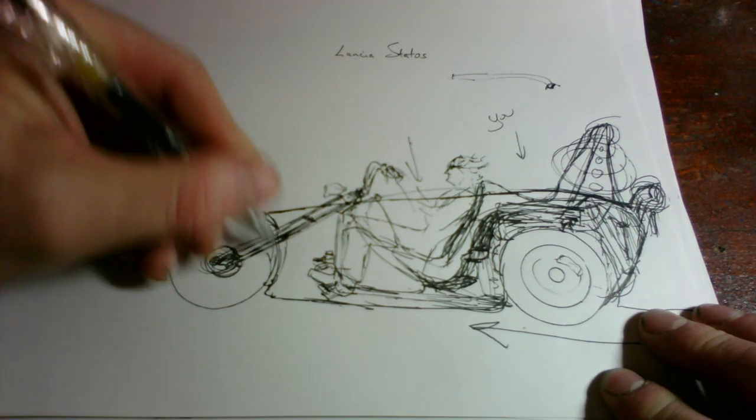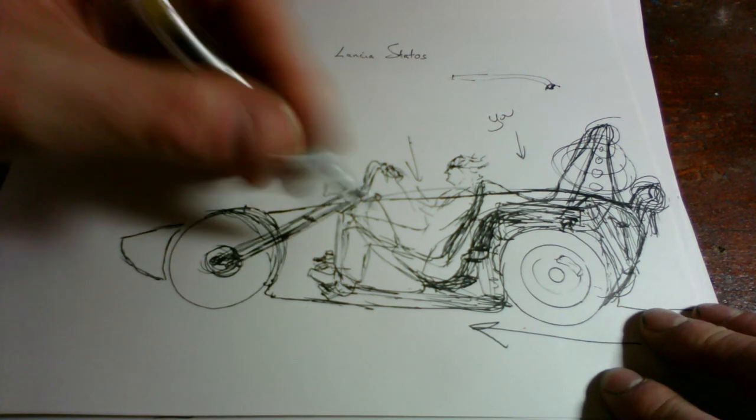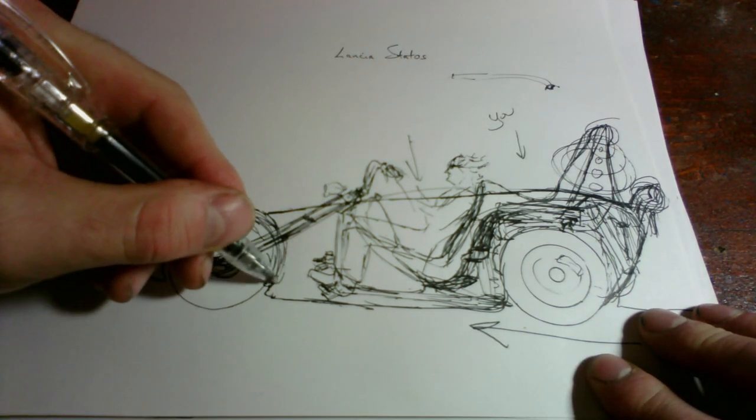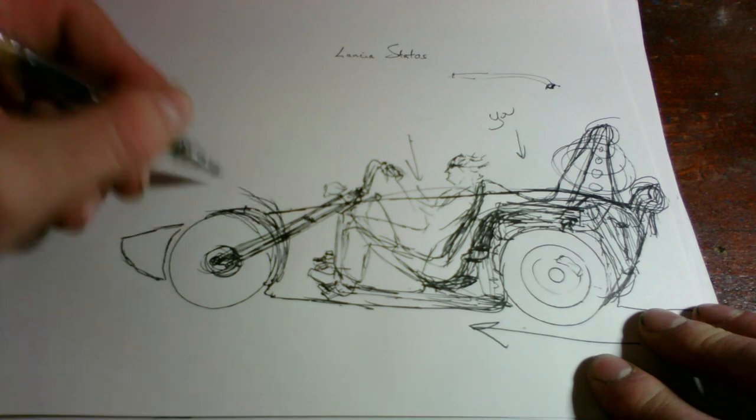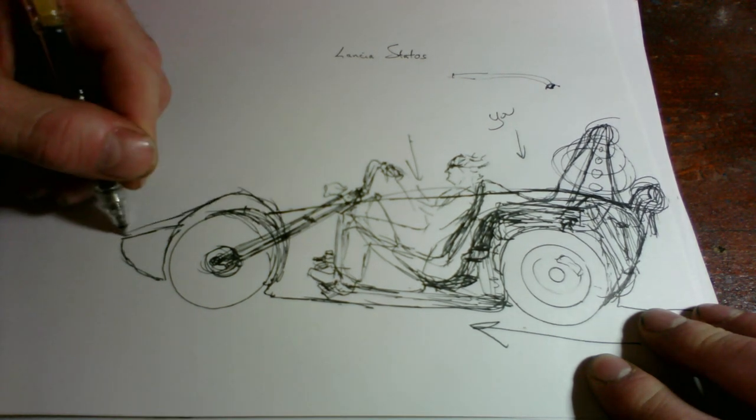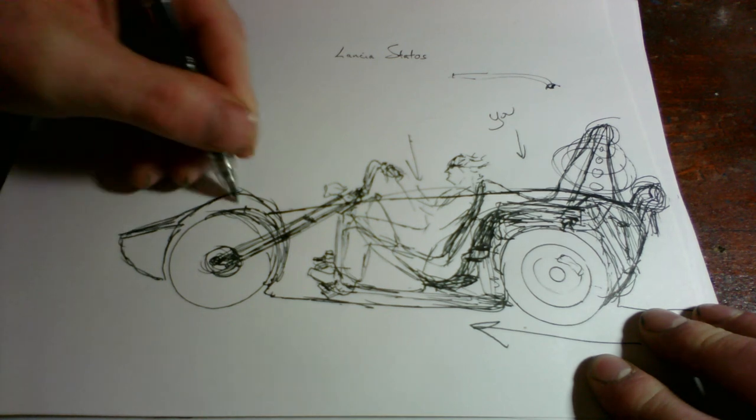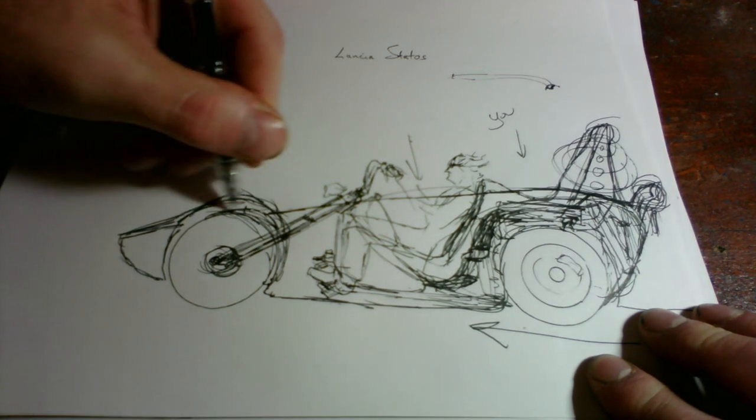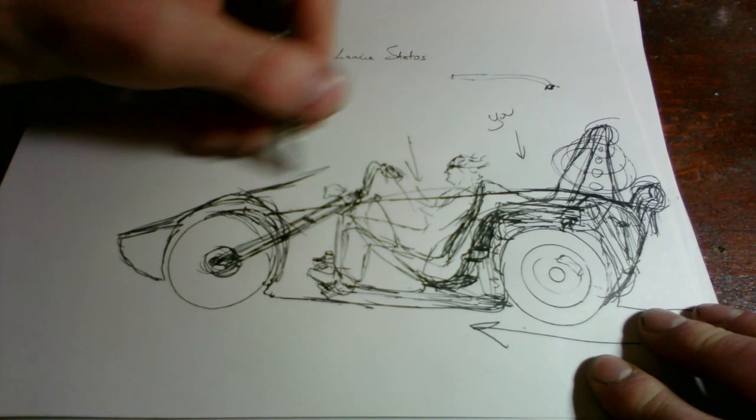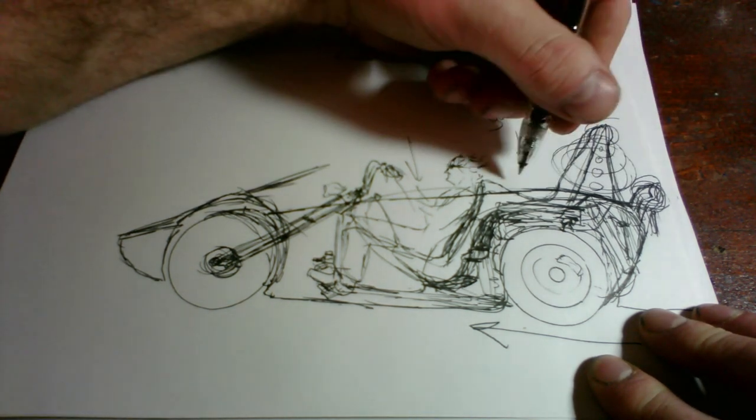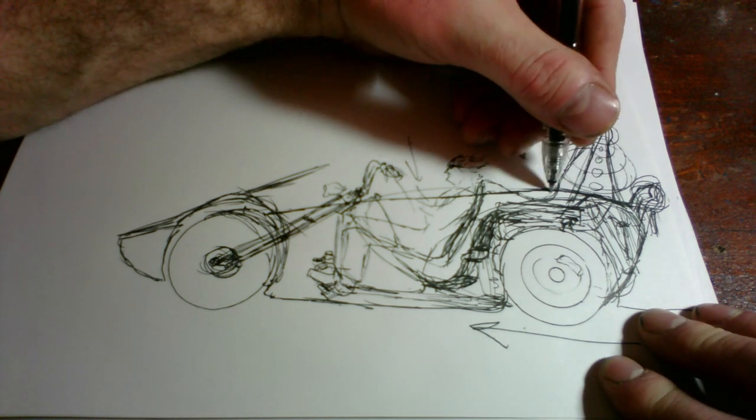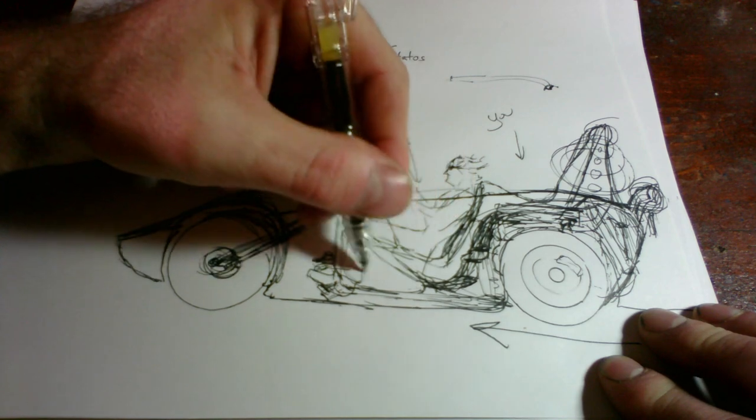Then another design element is these big almost triangular fender flares up here. That's a little bit excessive but you get the idea. We've got a very forward-facing window and where we're going to come up to, we may have to move the seat down even lower to make this work.